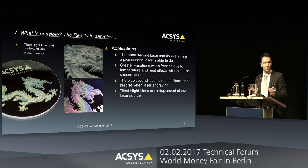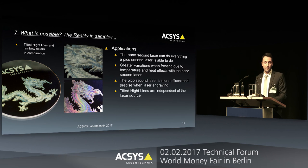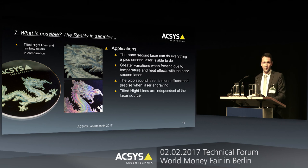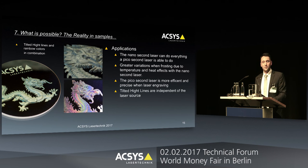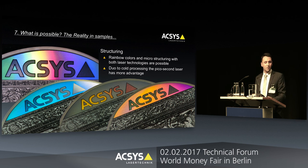Now, a quick conclusion. It is very important to understand that a nanosecond laser can absolutely do everything a picosecond laser is able to do. Because we can change the pulsation with the nanosecond and we have this heat affected zone, it gives us more variation, especially in terms of frosting. But the picosecond laser, when doing engraving, is much faster, gives better quality, and is more precise. The tilted highlight — as we call it, seen here on the left side — is something similar to what was shown in the previous presentation; we developed this together with them. This is essentially a complete flat marking we can add to the stamping die with our laser and strike it to our coin. Also, the rainbow color effect is purely a structure — and we found that rainbow colors with the picosecond laser are much brighter and give stronger colors, again because of the cold evaporation.